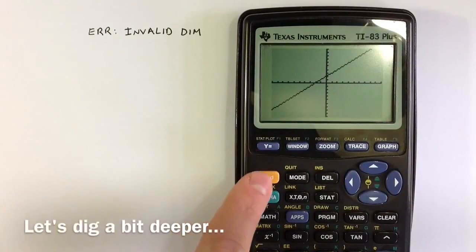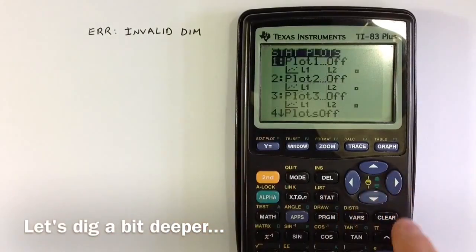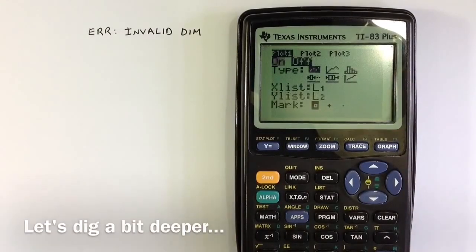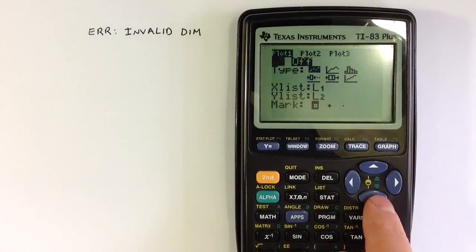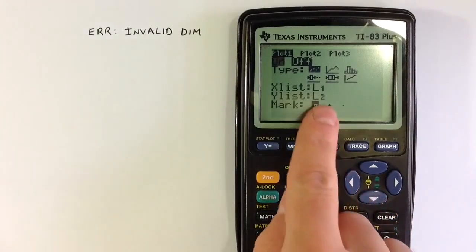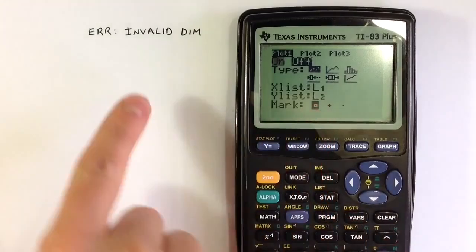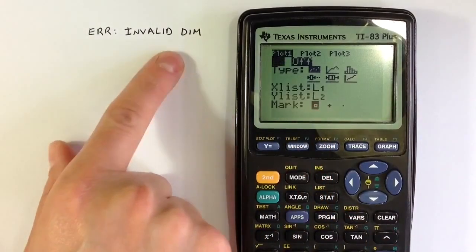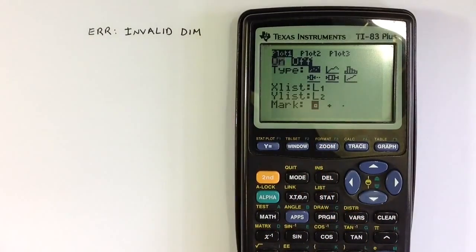Typically, the stat plot is used to create a scatter plot from data points in list 1 and list 2, and if the data in those lists isn't set up correctly, then we get an invalid dimension command. Dimension means the number of elements in the list.